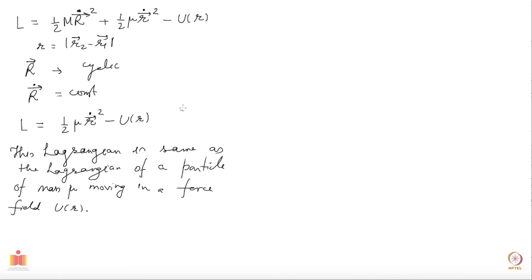We will now proceed from here and ask whether I can further make a better choice of coordinates. I went from r1 and r2 to capital R and small r — center of mass and separation — which immediately gave a cyclic coordinate I could eliminate from the Lagrangian. I would like to ask whether there is still something I can do about the coordinates. You can see why I might think this, because the potential depends only on the magnitude of vector r. So I can do more, and this is what we will look at next.